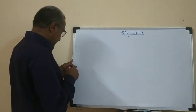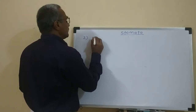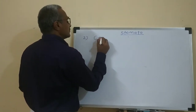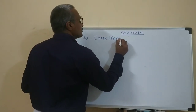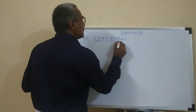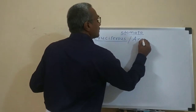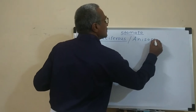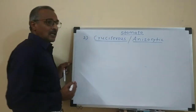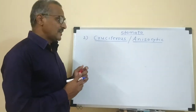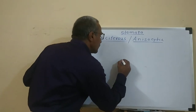The second type of stomata is the cruciferous type, also called anisocytic type of stomata. There is no similar arrangement as in the previous type.